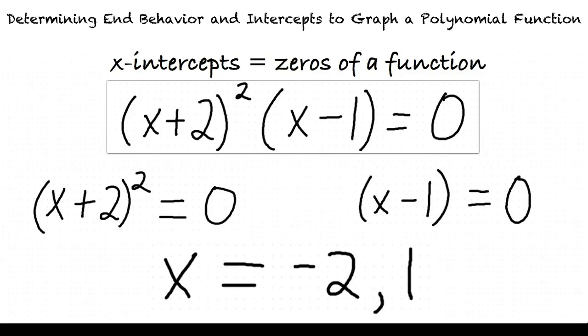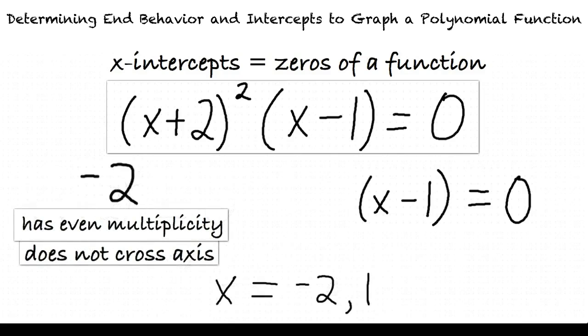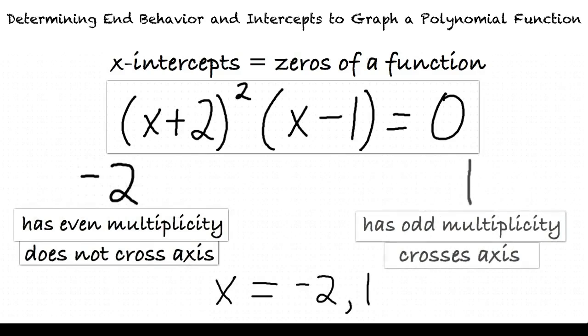To determine if the function crosses or merely touches the x-axis, we must determine the multiplicity of each x-value. Even multiplicity means that the function does not cross the axis at the given point, whereas odd multiplicity means the function does cross the axis at the point.